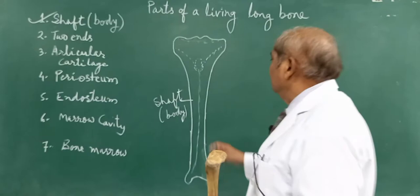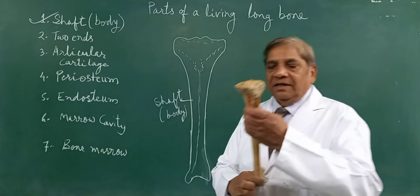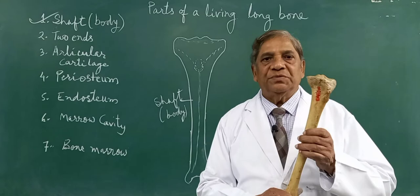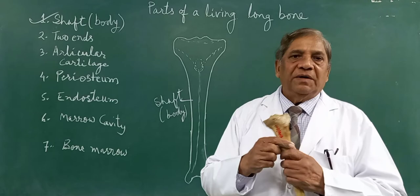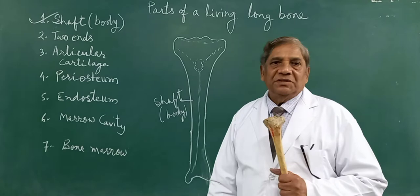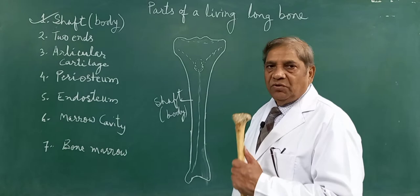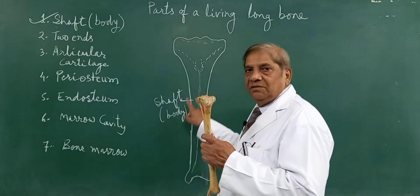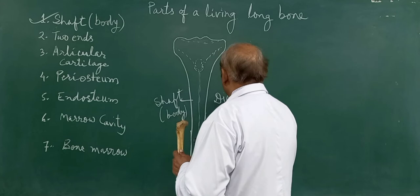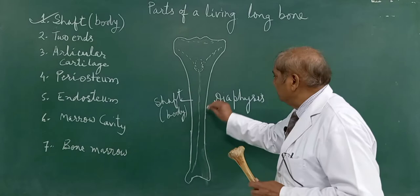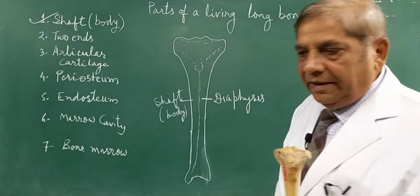This is the body part of the living long bone, the shaft. When you trace this shaft, you will see that it is made up of compact bone. Within this compact bone, inside there is a cylindrical cavity called as the bone marrow cavity. The shaft or body of any long bone is called as diaphysis.